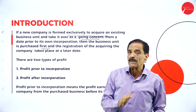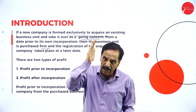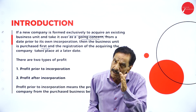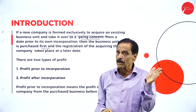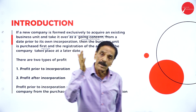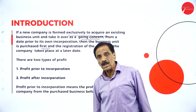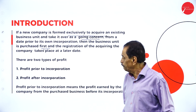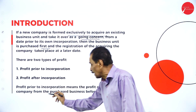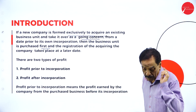Any profit earned from the beginning to the incorporation period is called pre-incorporation profit. Whatever profit is earned from the purchase period up to the incorporation date is pre-incorporation profit. The profit earned after incorporation is called post-incorporation profit. Profit prior to incorporation means the profit earned by the company from the purchased business before its incorporation.